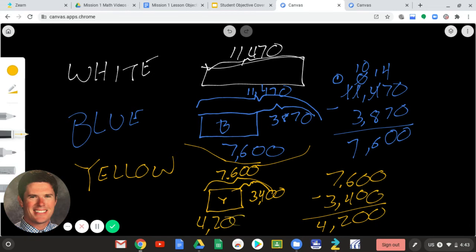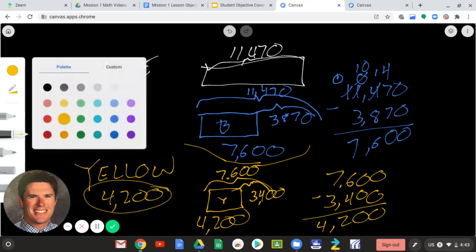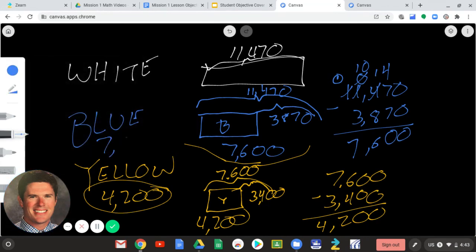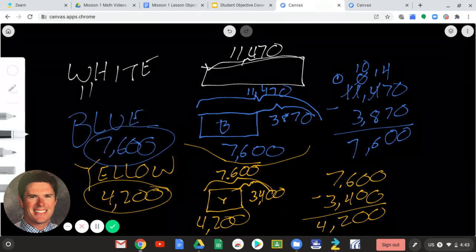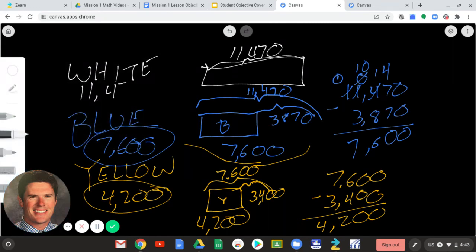Now, notice I'm kind of getting really sloppy here. I'm going to go back under, and I'm going to write those numbers below. So, yellow is 4,200. Blue was 7,600. And white is 11,470.